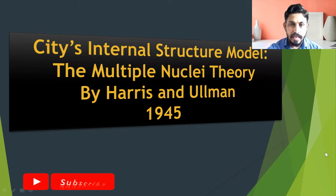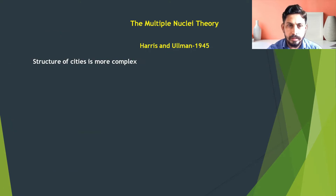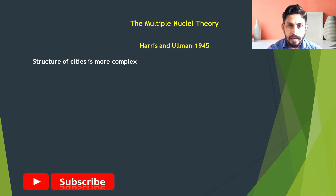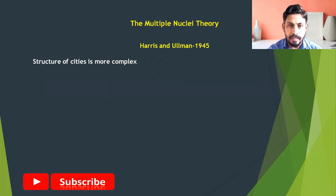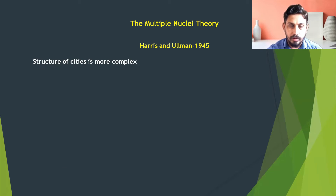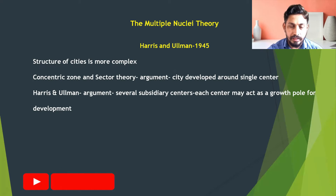The Multiple Nuclei Theory was proposed by Harris and Ullman in 1945. According to Harris and Ullman, the structure of the city is more complex than what was proposed in the concentric zone theory and sector model, which suggested that the city has a single center and most structures of cities were concentrated around that single center.